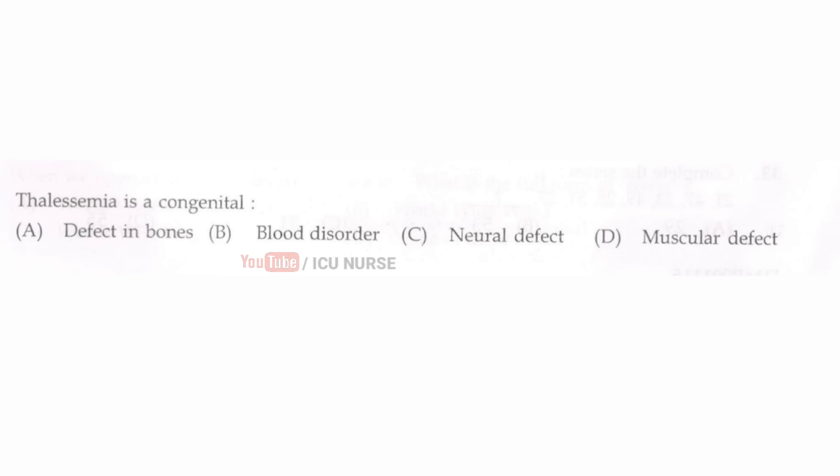Thalassemia is a congenital — the correct answer is B — blood disorder. Thalassemia is a congenital blood disorder.